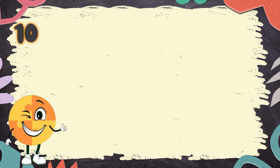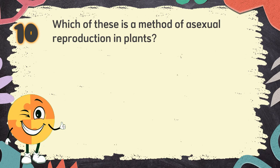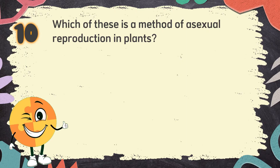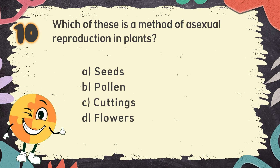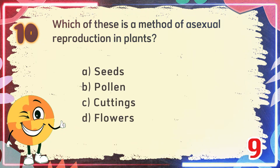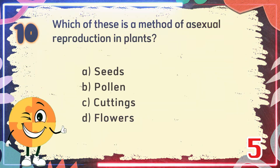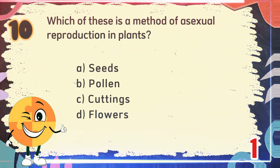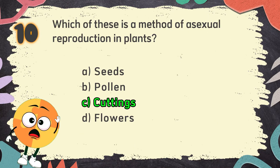Number 10: Which of these is a method of asexual reproduction in plants? The choices are: A. Seeds, B. Pollen, C. Cuttings, D. Flowers. The correct answer is C. Cuttings.